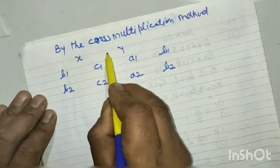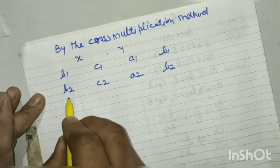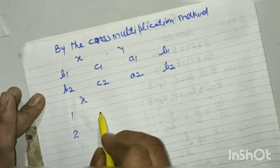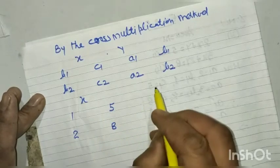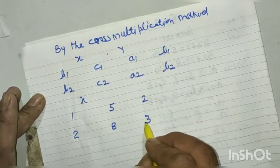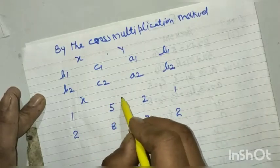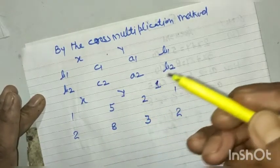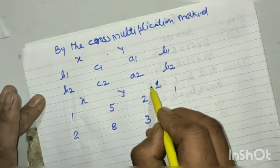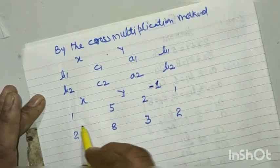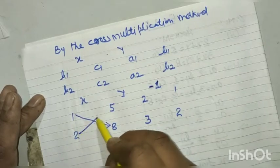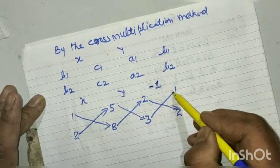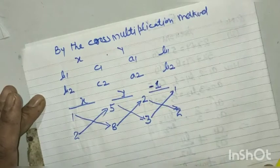So the values are: b1 = 1, b2 = 2, c1 = 5, c2 = 8, a1 = 2, a2 = 3, and b1 = 1, b2 = 2. Now, note that the constant term is on the right side and is not equal to 0, so the constant term becomes minus 1. We compute: 1×8, 2×5, 5×3, 8×2, 2×2, 3×1.